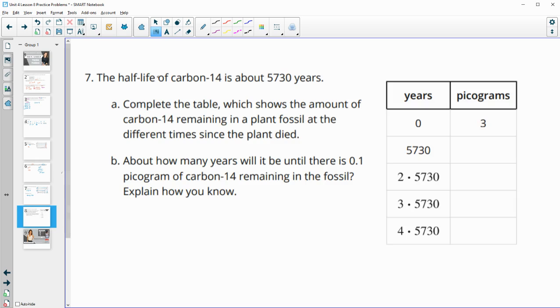Number seven, the half-life of carbon-14 is 5,730 years. Complete the table that shows the amount of carbon-14 remaining. So after 5,730 years, the picograms is half of the original amount. So we'll just take three divided by two and we get 1.5. Now we've done two half-lives. So we're going to go another halfway. So divide 1.5 by 2. Now we have three half-lives. So divide by two again and we get 0.375, a fourth one. So we'll divide again and get 0.1875.